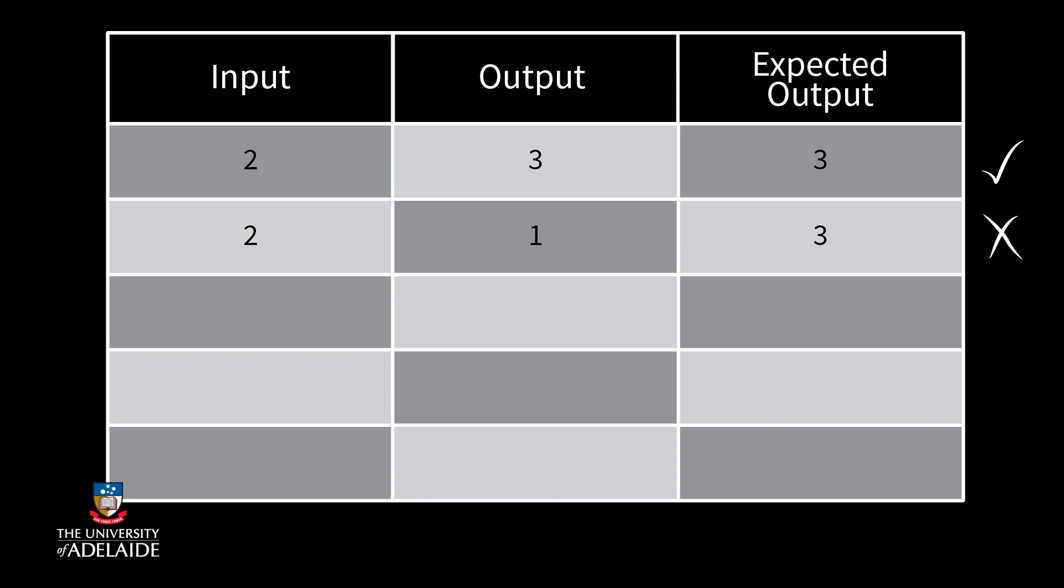For our example problem a test case would be given the input is the number 2 then our expected output is the number 3. If we then run our program with an input value of 2 and the program gives a result of 3 then we know our test case has passed.